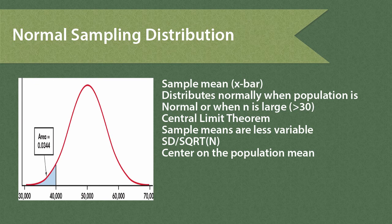Now let's look at a special application: the sampling distribution of the sample mean. We're using a normal probability distribution to model the distribution of all sample means for a particular sample size. The central limit theorem is one way to justify use of a normal model. We're going to learn the center of the sampling distribution, the standard deviation — called standard error of the mean — and how to calculate probabilities for various values of the sample mean.